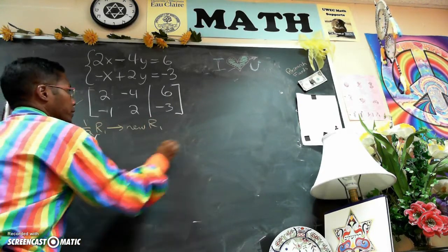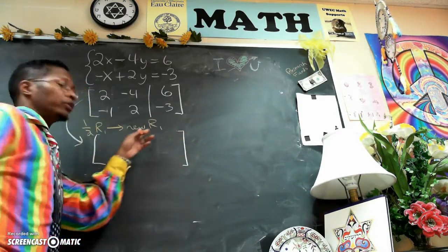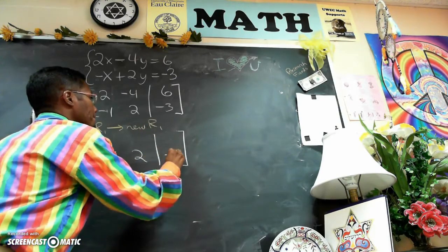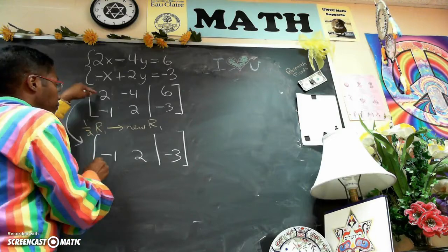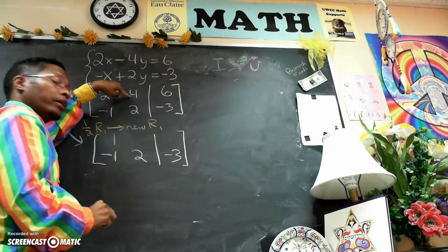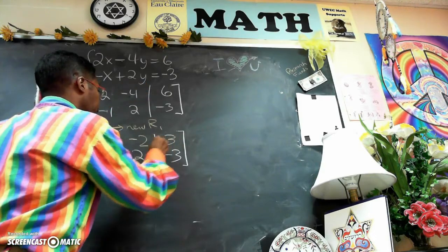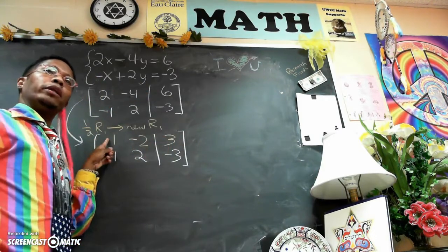So our new matrix is as follows. Since only row 1 is changing, row 2 stays the same. And row 1 is half of 2 is 1, half of negative 4 is negative 2, half of 6 is 3.